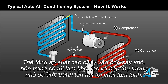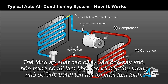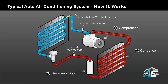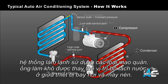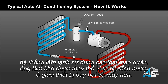The high pressure liquid flows through the receiver dryer, which has a desiccant bag inside it to filter and absorb small amounts of moisture that may contaminate the refrigerant. On the AC system using an orifice tube, the receiver dryer is replaced with an accumulator, which is located between the evaporator and the compressor.